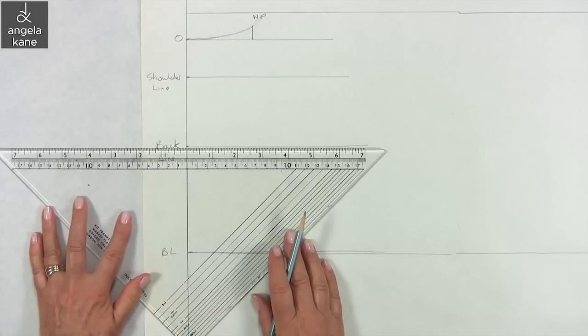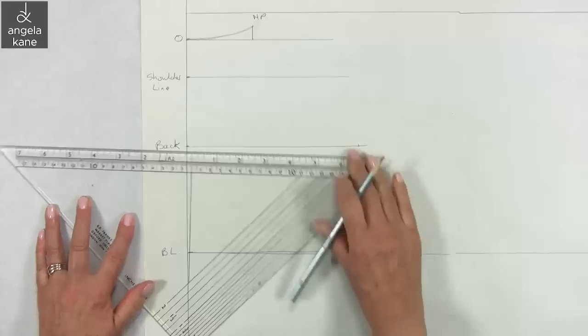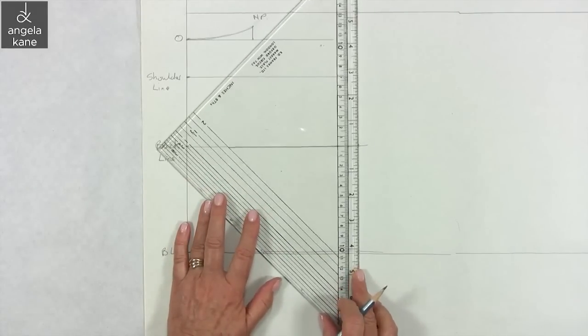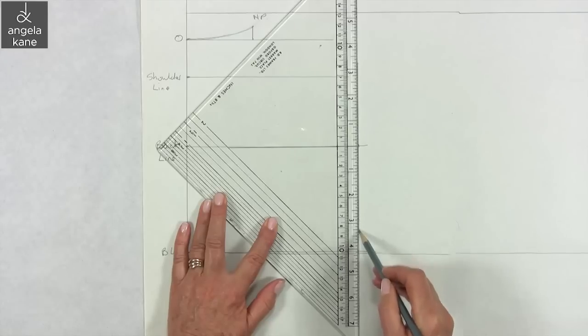Now along the back line measure half the back width using your own measurements. Draw a vertical line through this point and up through the shoulder line and down through the bust line.